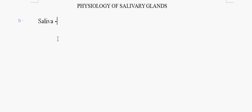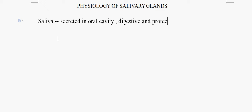Today we will see about the physiology of the salivary glands. Saliva is secreted in our oral cavity and contains essential digestive juices. It has digestive enzymes like amylase, lipase, and maltase, and protective enzymes like lysozyme and lactoferrin. It also contains immunoglobulin A, which has protective functions against several pathogens that enter through our oral cavity.